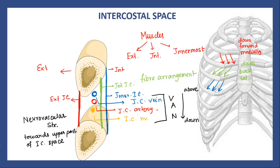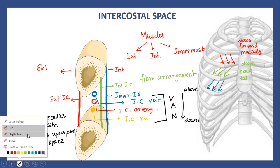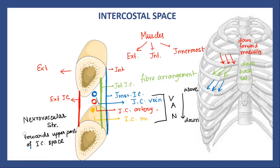Whenever we perform any kind of paracentesis or pleural tapping, we try to go near the upper border of the rib below so that we don't injure any neurovascular structures. So whenever you are doing pleural tapping, always go from the upper border of a rib so that you do not injure the neurovascular structures present in the intercostal space.